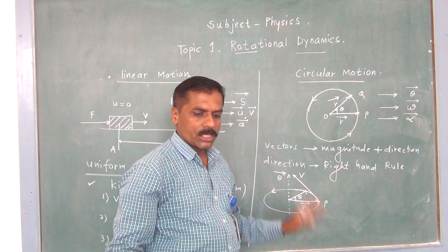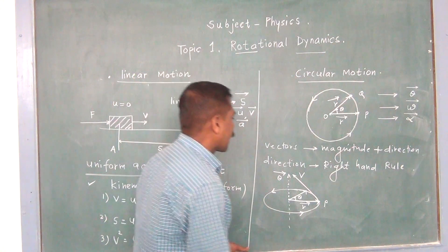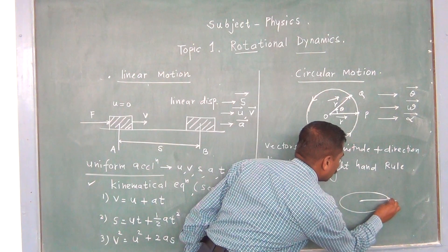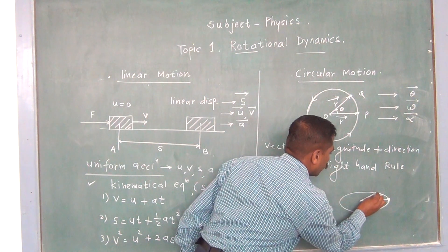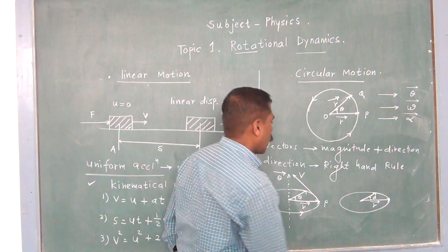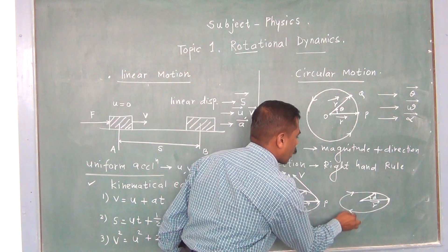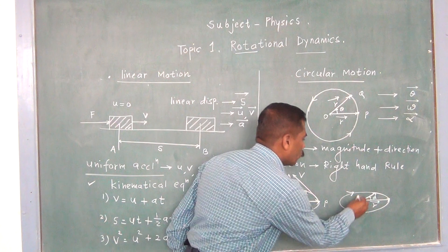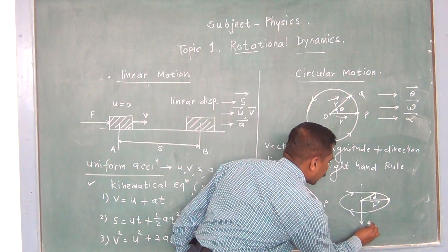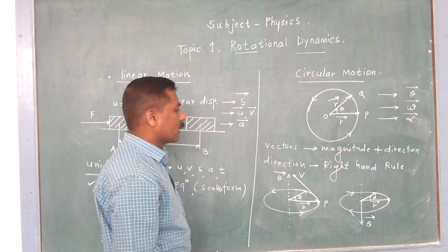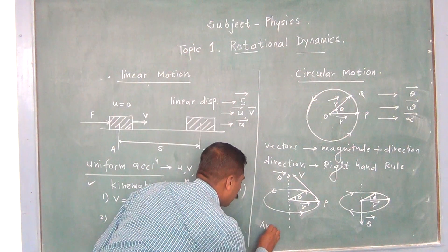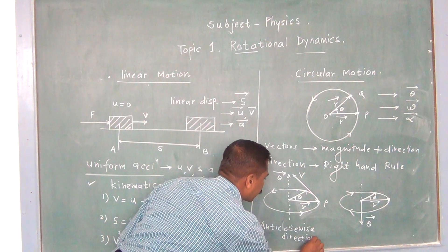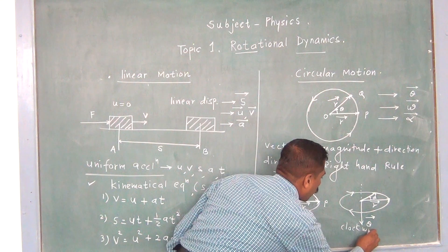You will find the direction of these vectors. This diagram can also be drawn like this. Suppose this is the circular motion, this is the radius vector, and this is angle theta. Now the particle is moving in the clockwise direction. This arrow indicates whether the particle is moving anticlockwise or clockwise. If it is moving in the clockwise direction, you can find the direction of the angular displacement is in the downward direction.